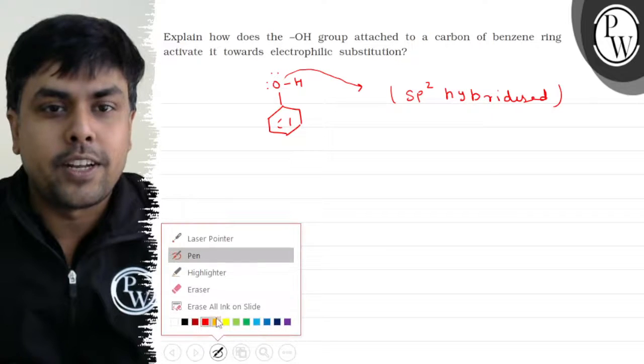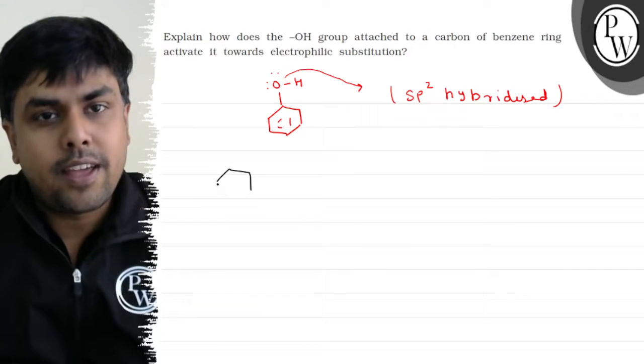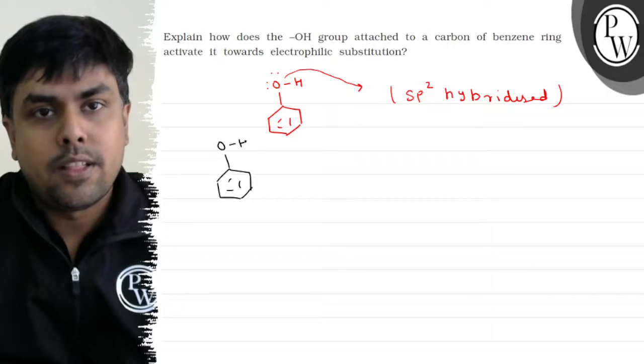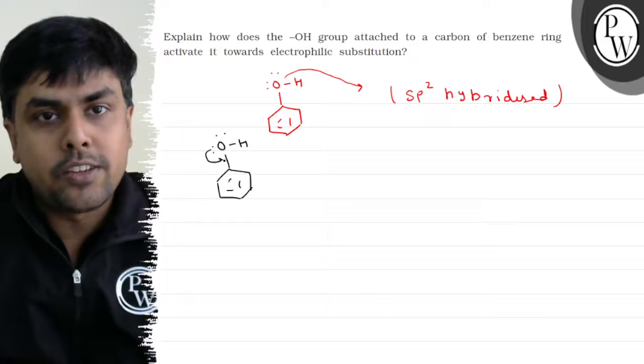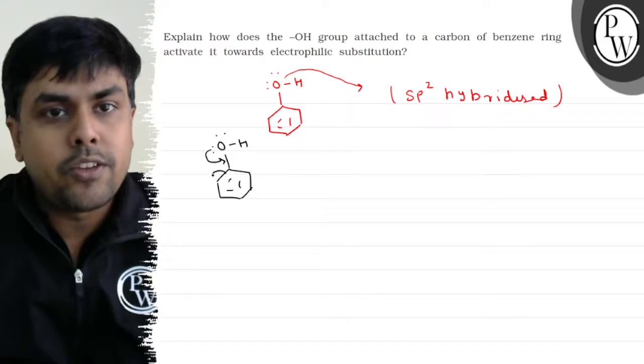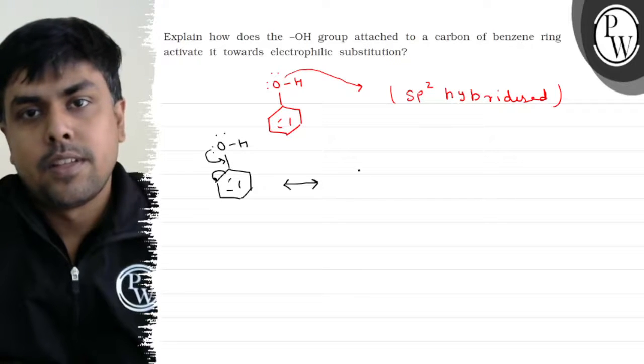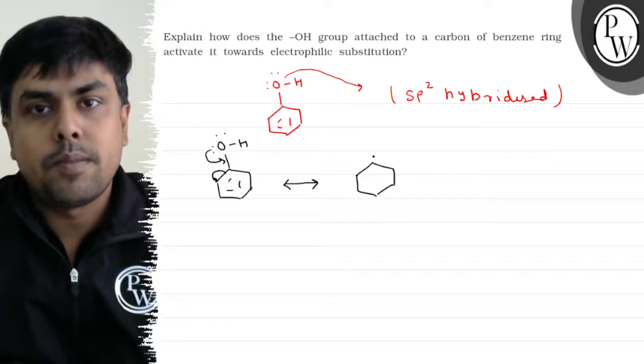Let's write the different resonating structures. Now, this is phenol. The movement happens when the lone pair gets delocalized. As it gets delocalized, the double bond will shift on the adjacent atom. So its first resonating structure will form something like this.